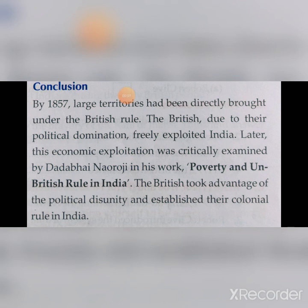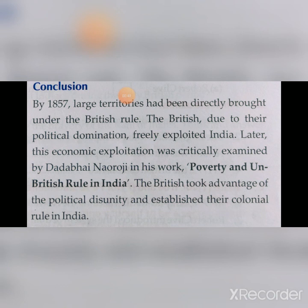By 1857, large territories had been directly brought under British rule. The British, due to their political domination, freely exploited India. This economic exploitation was critically examined by Dadabhai Naoroji in his work 'Poverty and Un-British Rule in India.' The British took advantage of the political disunity and established their colonial rule in India.